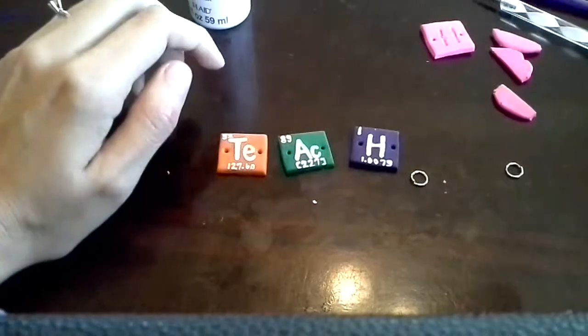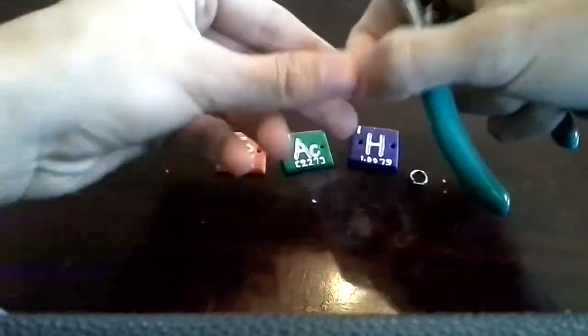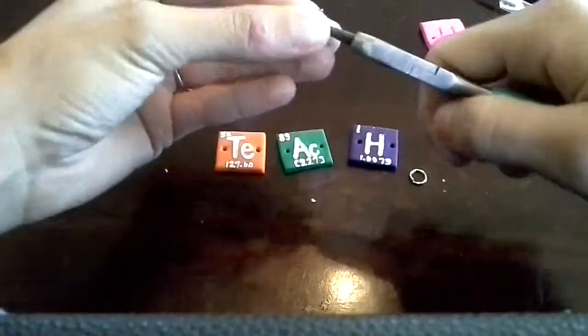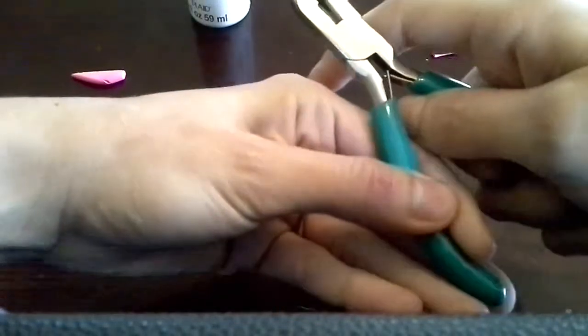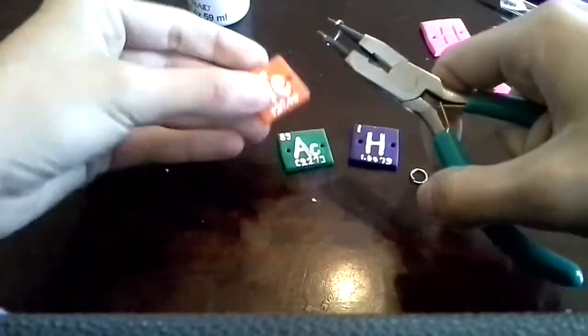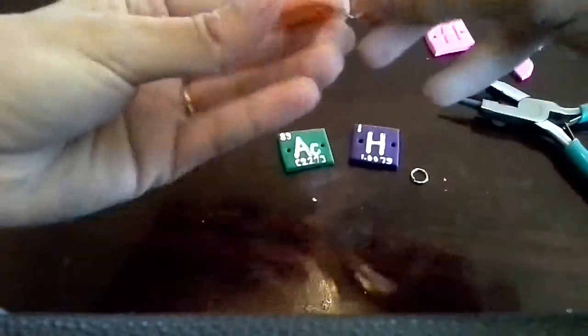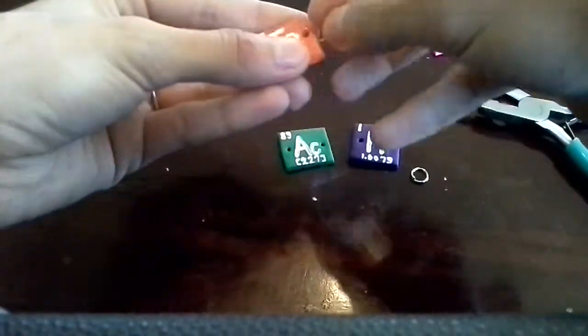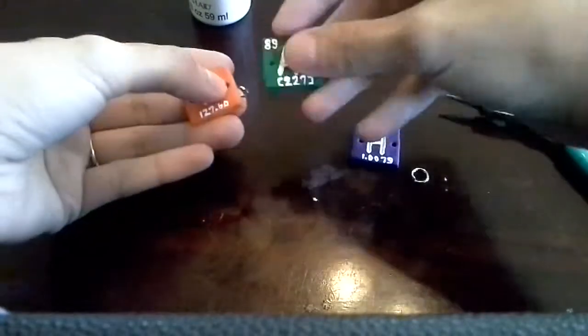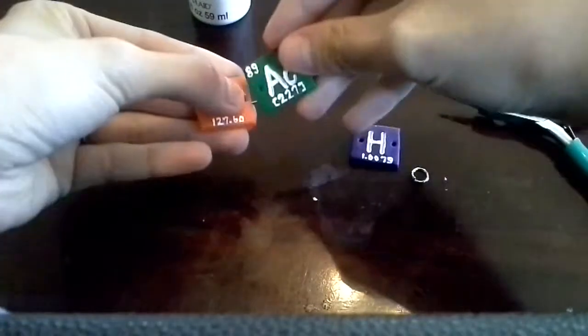And then I'm going to use these little jump rings to put them together. So first you want to separate the jump rings. And then you want to carefully put this in.